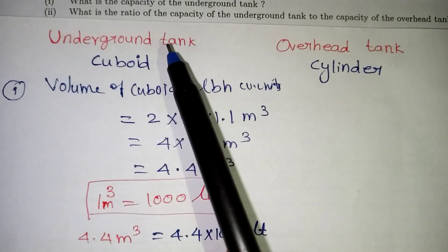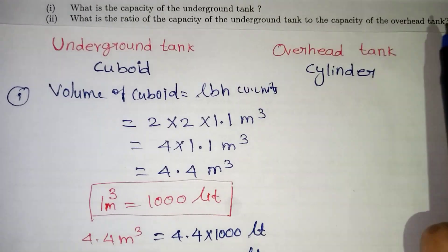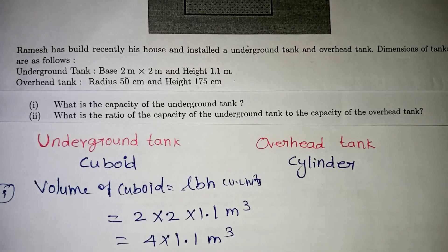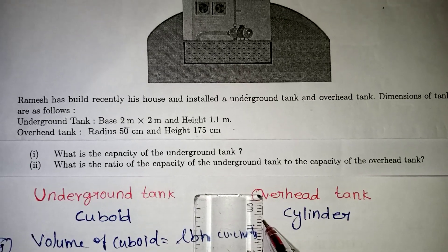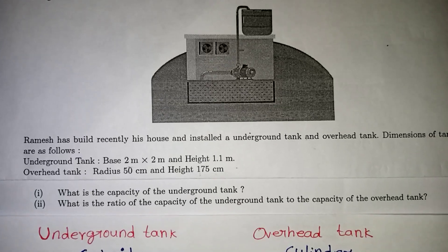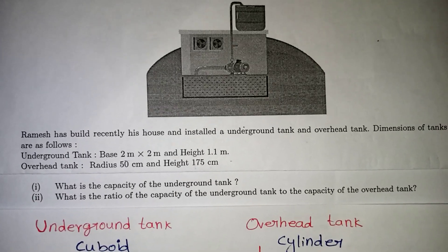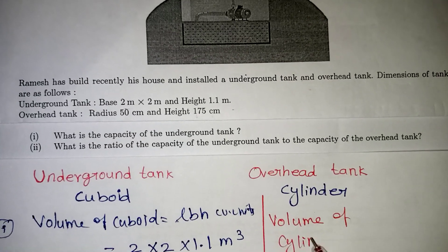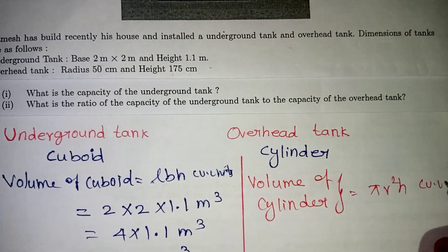The second part asks: what is the ratio of the capacity of the underground tank to the capacity of the overhead tank? The overhead tank is cylindrical, so we use the volume of a cylinder formula: Volume = π r² h (cubic units).